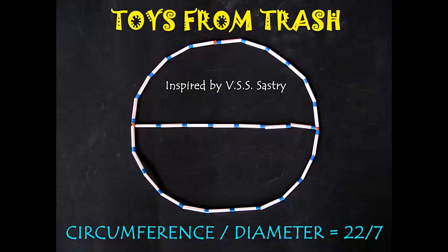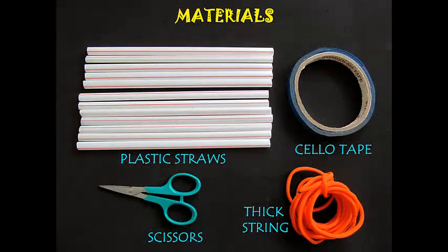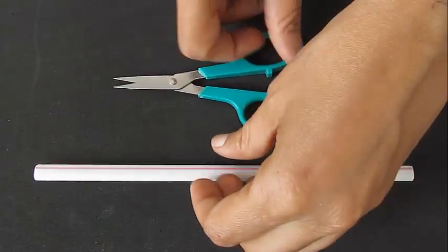Using this simple and wonderful experiment, you can actually see the approximate value of pi, which is 22 by 7. You just need some plastic straws.